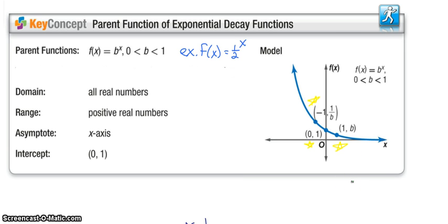Our domain is still all real numbers. Range is still positive reals, if we haven't shifted up or down. Our asymptote is still going to be that x-axis, and our intercept is still going to be 0, 1. And again, plotting one point to the left, one point to the right, usually serves as a nice guide.